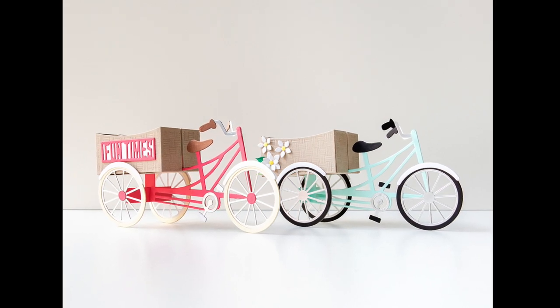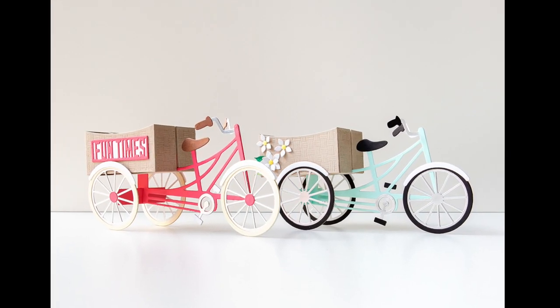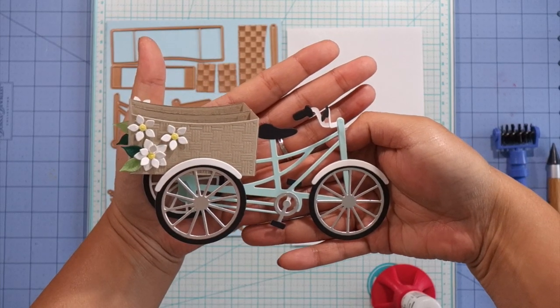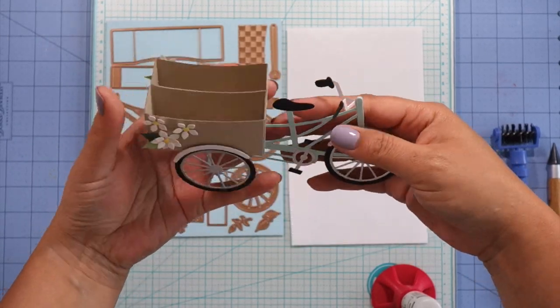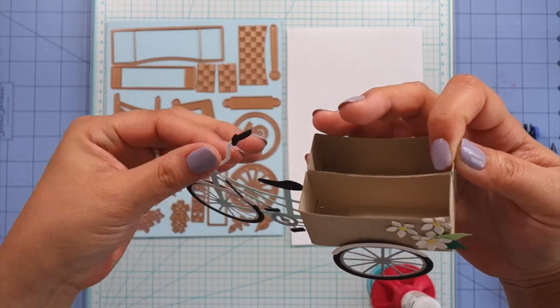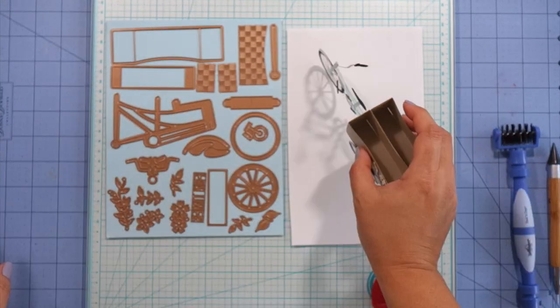Hi everyone, it's Jung here. Today I'm sharing my projects that I made using the Spellbinders July 2019 Large Die of the Month. This month it's called the 3D Funtime Cruiser and you get all the die pieces you need to create this cute little tricycle with the baskets as well as a few pieces to decorate.